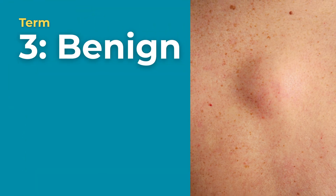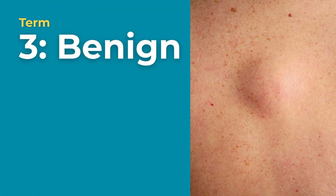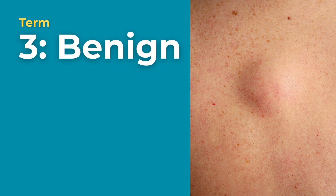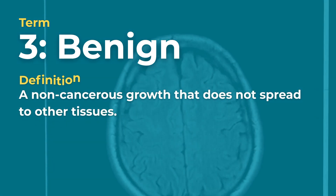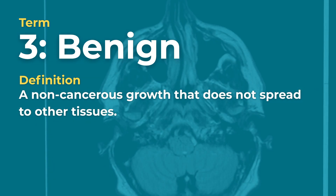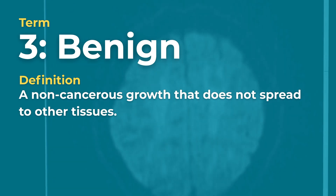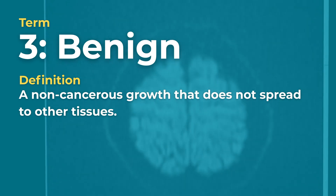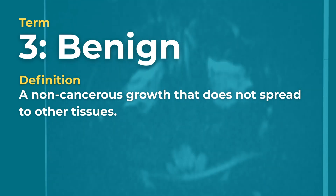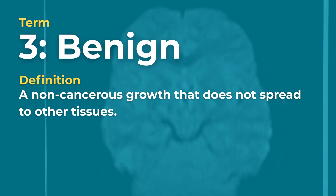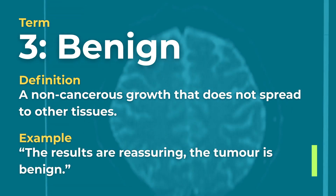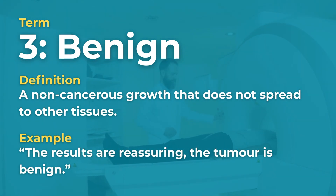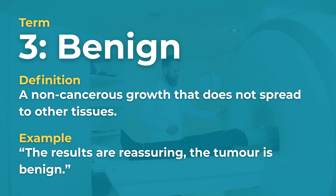Term number three is benign. The term benign means a non-cancerous growth that does not spread to other tissues. Example: 'The results are reassuring — the tumour is benign.'